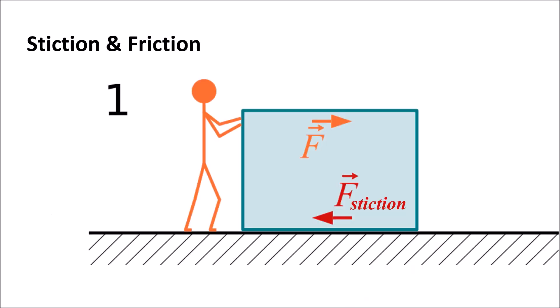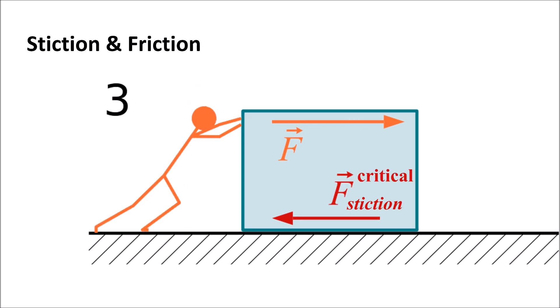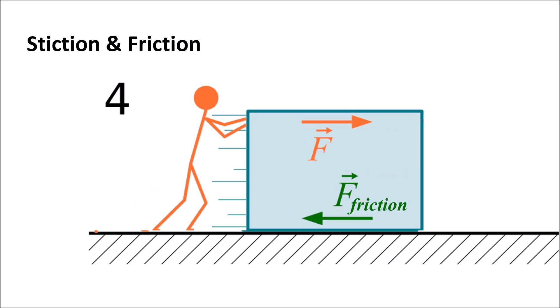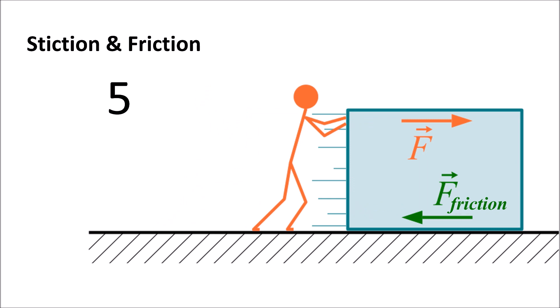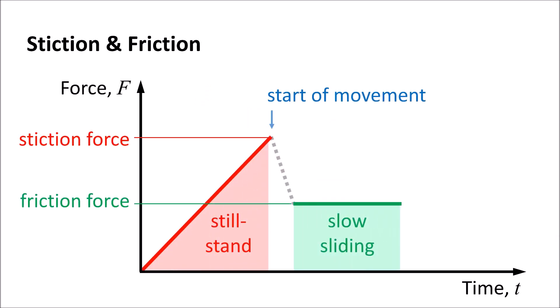We can distinguish between stiction and friction. During stiction the object sticks on the ground. As soon as it starts to move, the object slides and friction occurs. Friction force is usually smaller than stiction force, and friction at higher speeds is usually larger than at lower speeds.